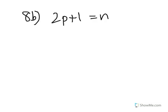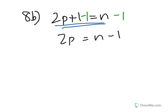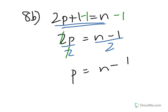The next question uses the equation from 8a and asks you to make p the subject. Subtract 1 from both sides: 2p equals n minus 1. Then divide both sides by 2: p equals (n minus 1) over 2.